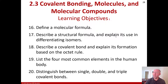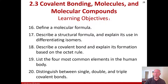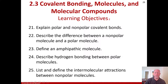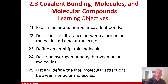Learning objectives for this section are to define a molecular formula, describe a structural formula and explain its use in differentiating isomers, describe a covalent bond and explain its formation based on the octet rule, list the four most common elements in the human body, distinguish between single, double, and triple covalent bonds, explain polar and non-polar covalent bonds and the slight differences between them, describe the difference between a non-polar molecule and a polar molecule, define an amphipathic molecule, describe hydrogen bonding between polar molecules, and list and define the intermolecular attractions between non-polar molecules.